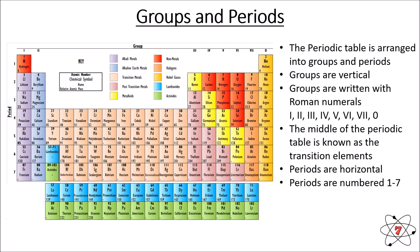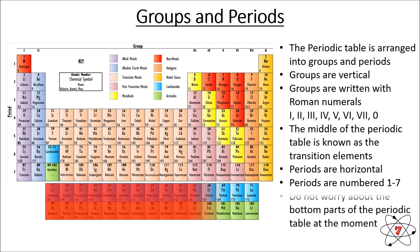The periods are numbered one to seven and use normal numbers — we don't use Roman numerals for periods at all. The bottom of the periodic table, called the lanthanides and actinides, is not something we need to worry about right now.